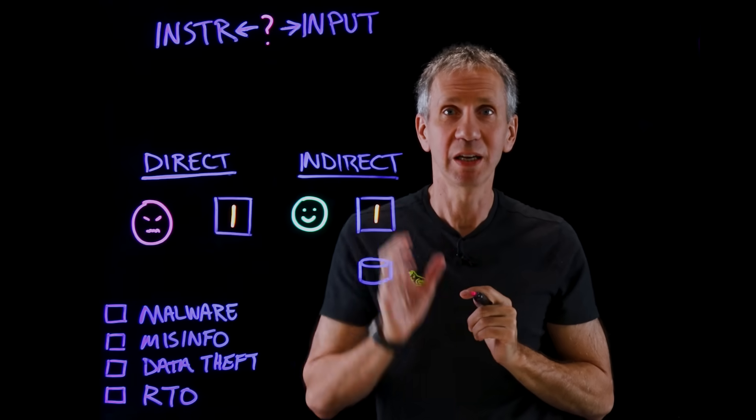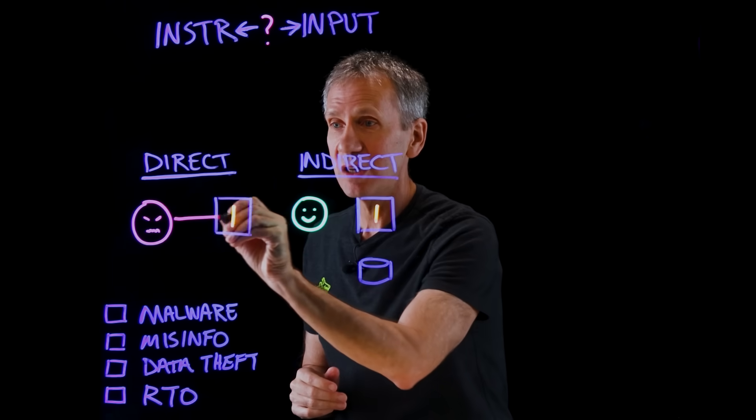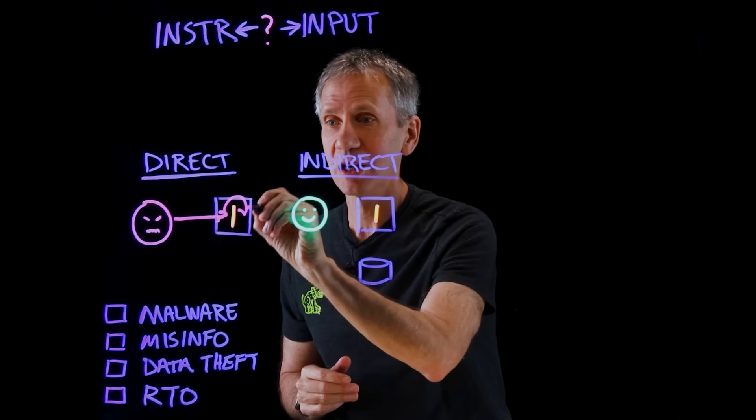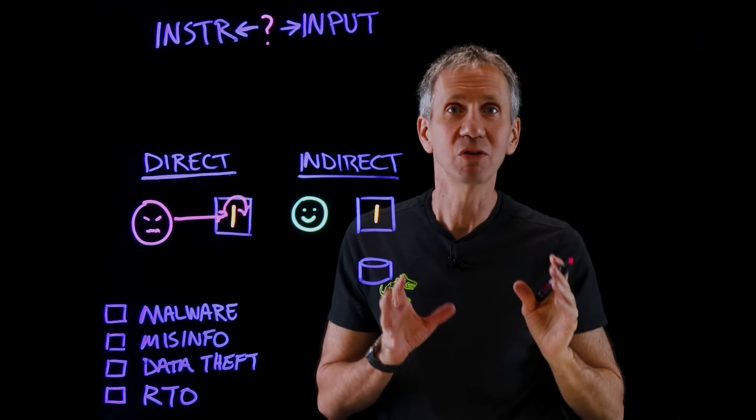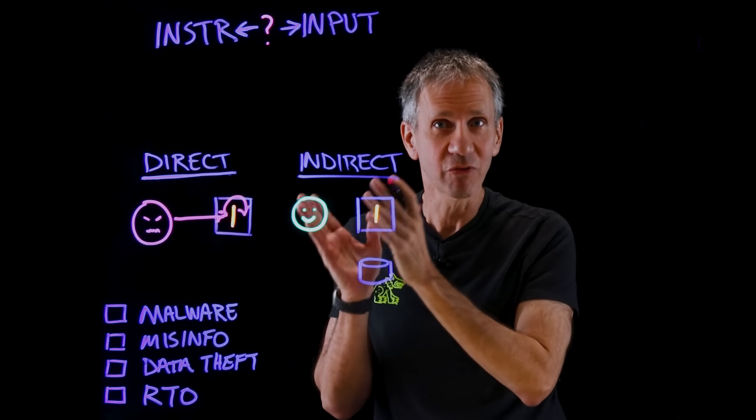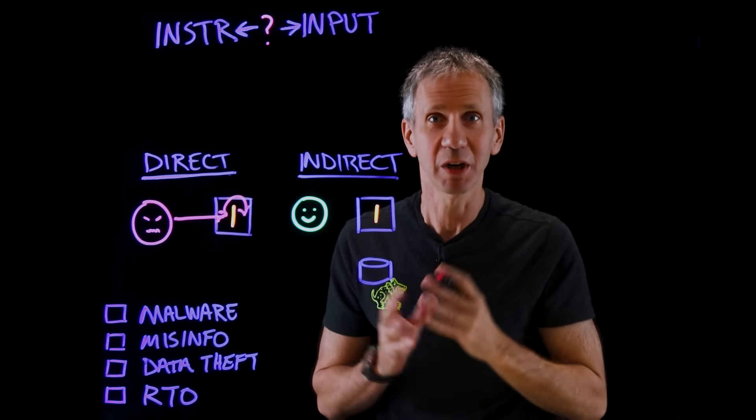There's a direct prompt injection and an indirect. In a direct, here's a bad actor that basically is inserting a prompt into the system, and that is causing it to get around its guardrails. It's causing it to do something it wasn't intended to do. We don't want it to do that. Okay, that one is fairly straightforward, and you've seen examples.